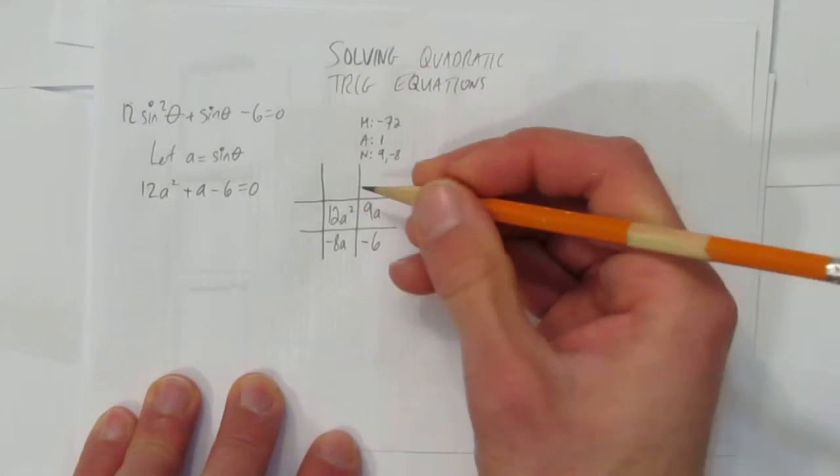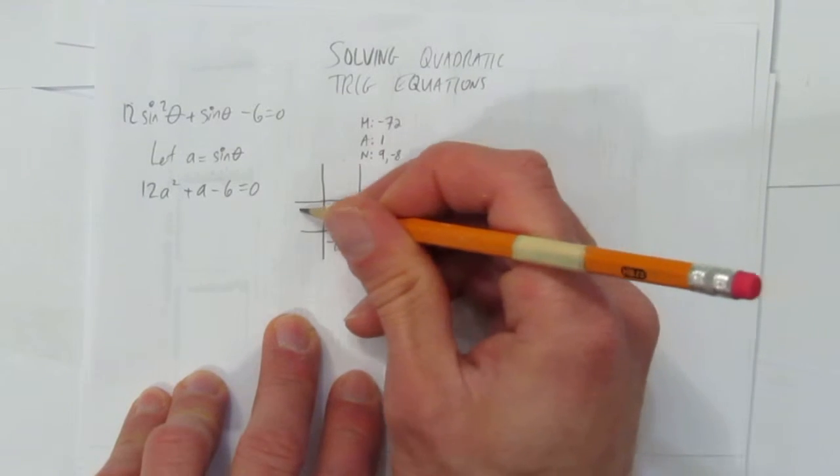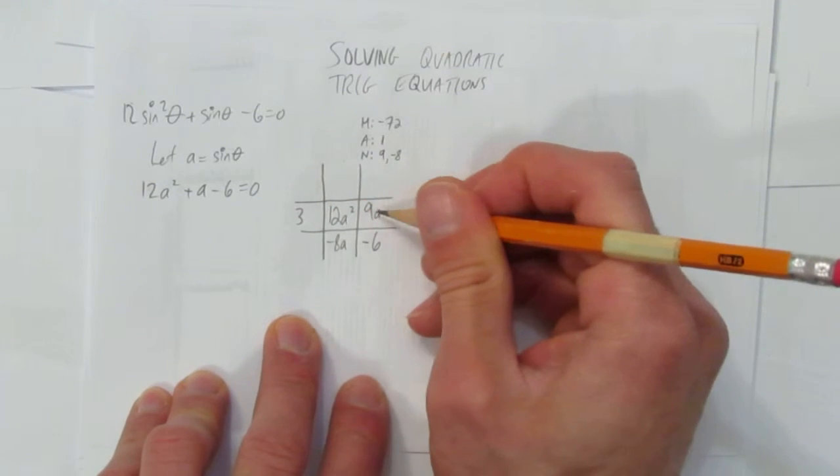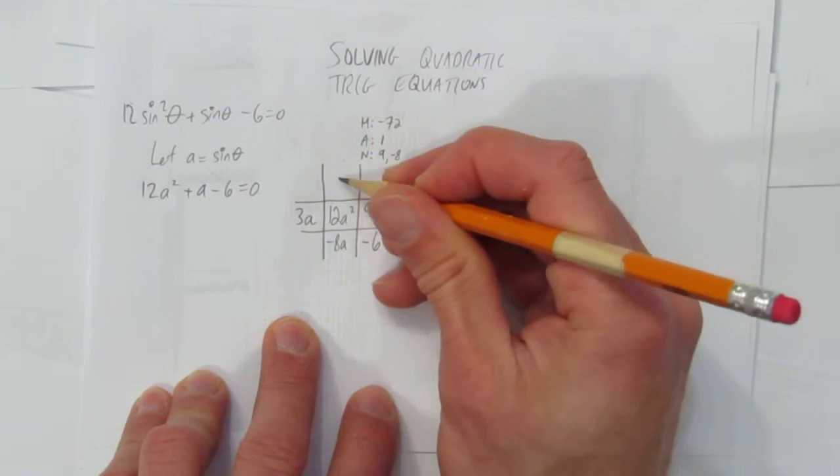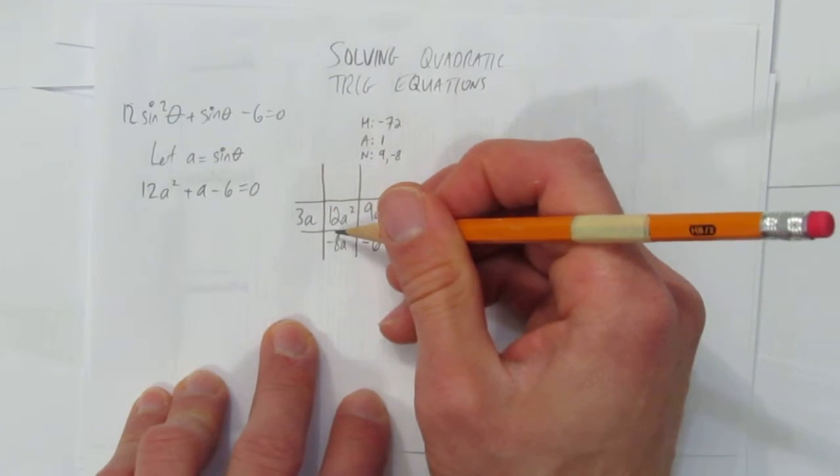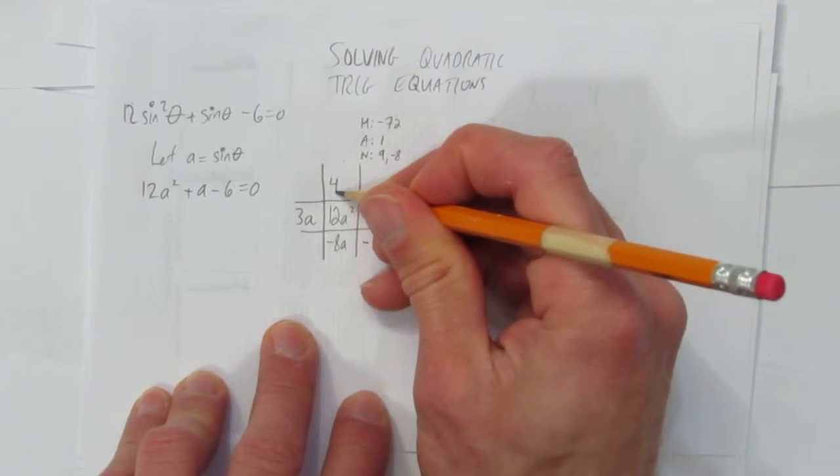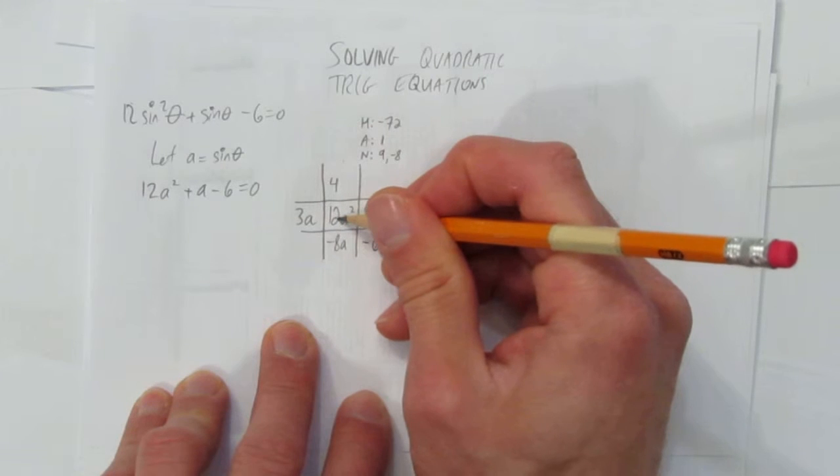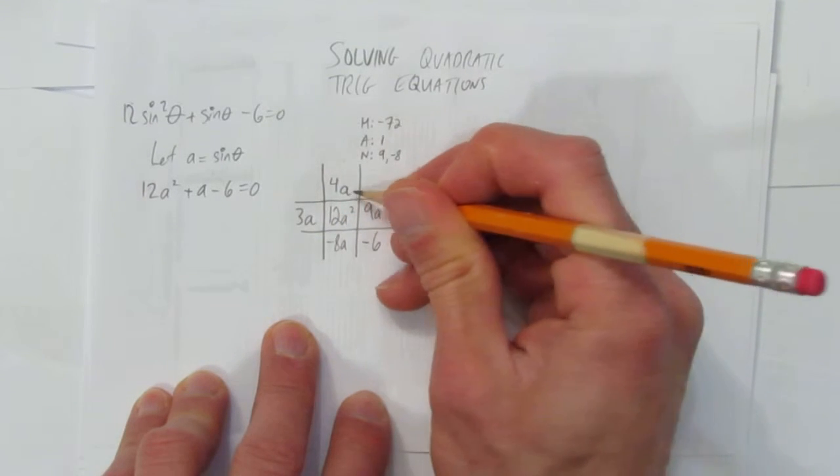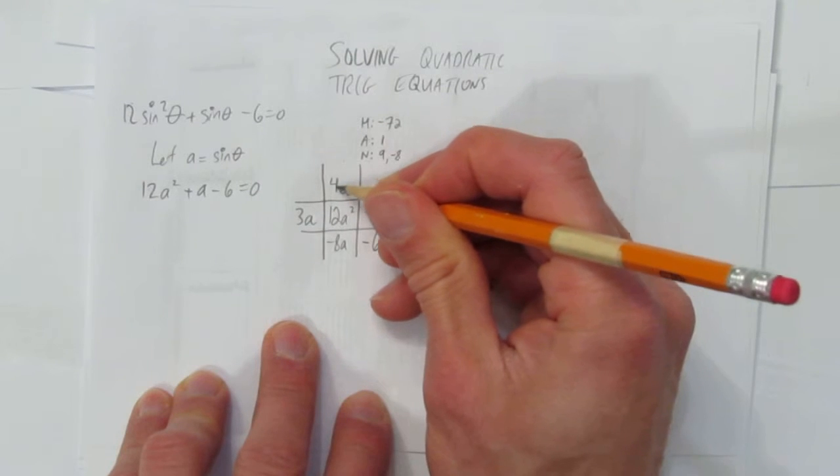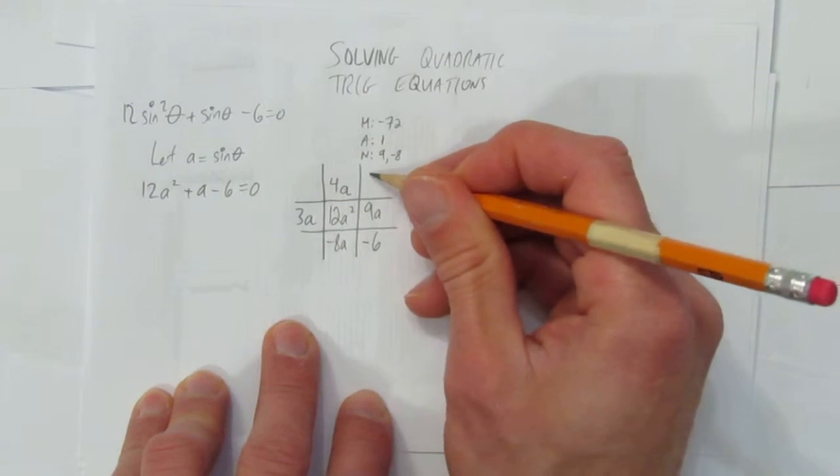Watch the video on chart method if you don't know. Also for example the negative 6 goes here. And then we'll put the 9a's here and then negative 8a's here. And now we common factor rows and columns. Let's start with this row. What goes into 12 that goes into 9? A 3. And what goes into a squared that goes into a? A. And now we common factor this column. What goes into 12 that goes into negative 8? A 4. And these have to multiply to be 12. What goes into the a squared and the a? A.